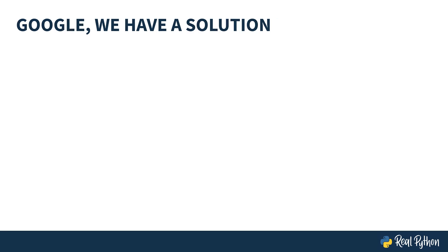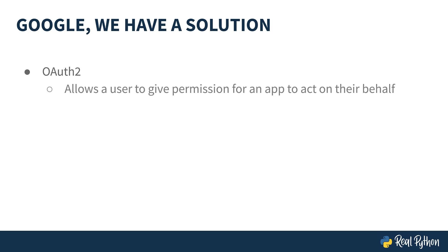Before getting into Google Login, you should understand two specifications: OAuth 2 and OpenID Connect, or OIDC. OAuth 2 allows a user to give permission to an app to act on their behalf. In the demo app for this course, users of your app will give your app permission to access basic profile information from their Google account.